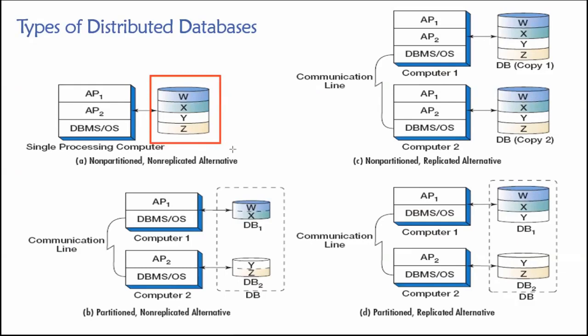So if these are some tables, tables W, X, Y, and Z, or Z if you learn British English, they're just all living on one machine. So we've got our database management system on top of our operating system on that machine, and maybe we have some application programs, AP1 and AP2, that also live on that machine. And it's fine, a very simple design, single processing, non-partitioned, non-replicated design. All right, so that's one approach.